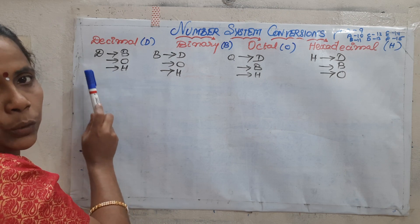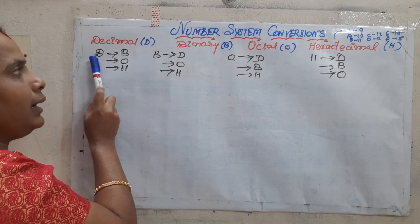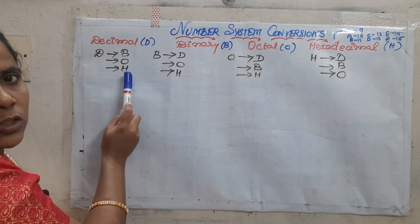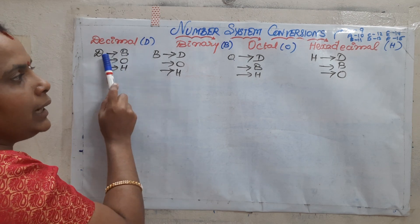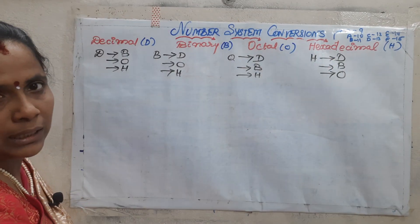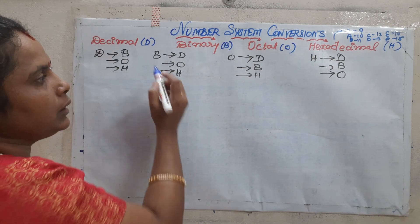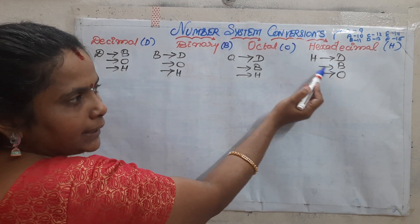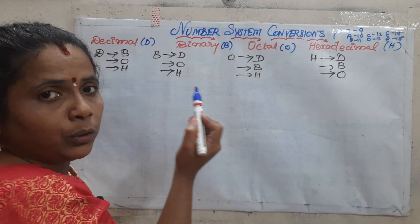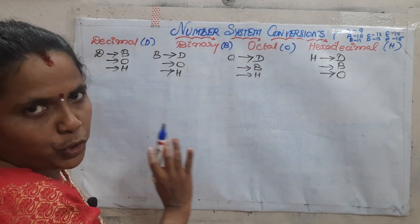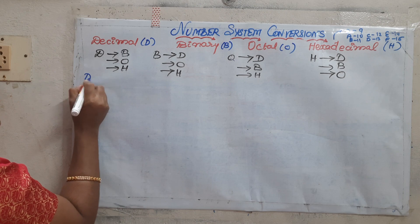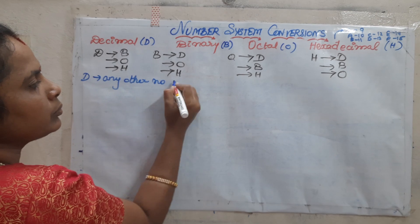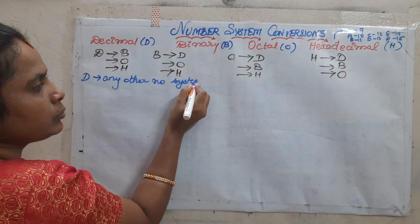The 12 conversions are: decimal to any other number system — binary, octal, or hexadecimal — that is one set. Then from any other number system to decimal, that is the next set. The third group is binary to octal, binary to hexadecimal, similarly hexadecimal to binary and hexadecimal to octal. We will see all 12 conversions in today's class. First we will see decimal to any other number system.